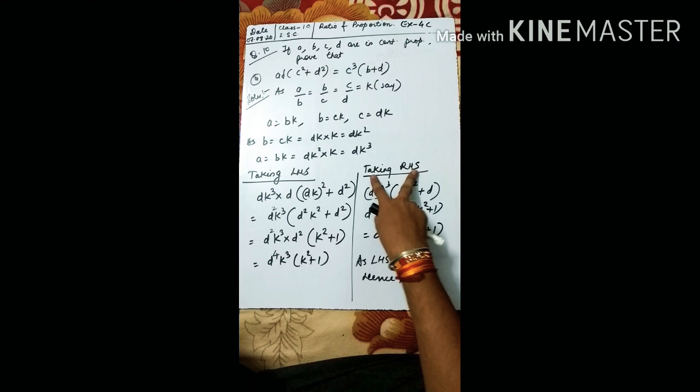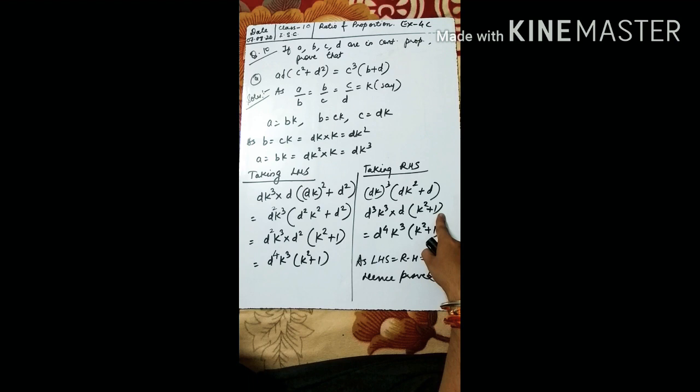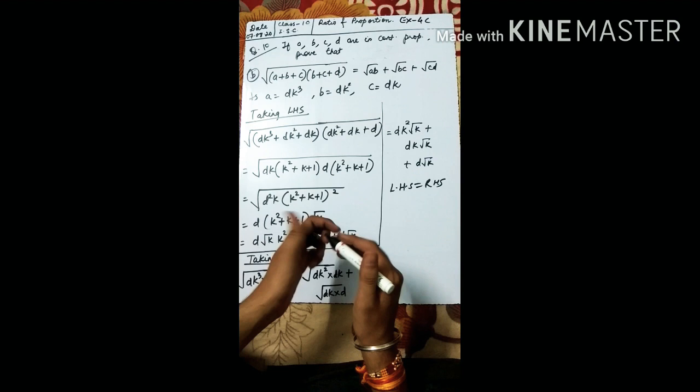Now taking RHS: c³(b + d). c = dk so c³ = d³k³. b = dk², d = d. Take d common from the bracket: d(k² + 1). So RHS = d³k³ · d(k² + 1) = d⁴k³(k² + 1). Since LHS = RHS, hence proved.